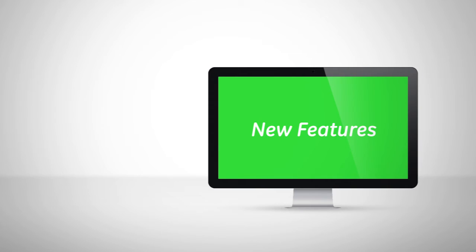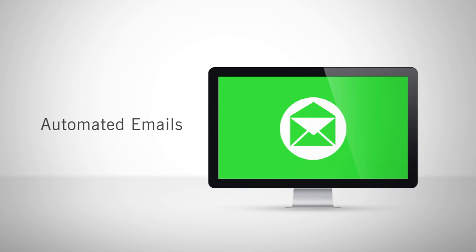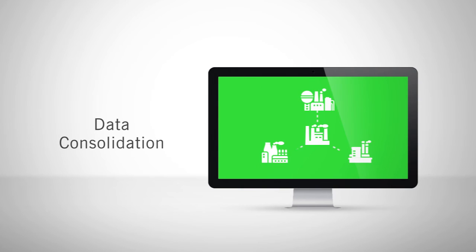SureTrend Version 4 offers several brand-new features to optimize your monitoring program. With automatic email scheduling, SureTrend sends your favorite reports right to your email inbox so you can get regular updates on plant hygiene without spending time crunching numbers and running reports. For large companies with multiple facilities and multiple systems, central data consolidation allows you to easily manage users and locations from one database, so management can quickly share and compare test results.